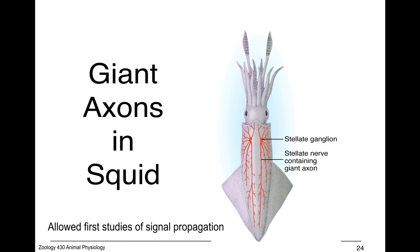One of the ways that early physiologists studied signal propagation in neurons is by way of the giant axons in the squid. They have these enormous giant axons.